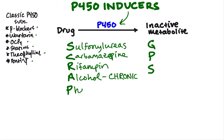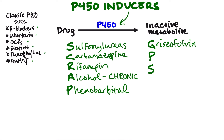P stands for phenobarbital, a barbiturate not used too often anymore. G stands for griseofulvin, an antifungal primarily used for tinea infections. The next P stands for phenytoin, a very common drug that is also an anti-epileptic — you'll want to know that one.